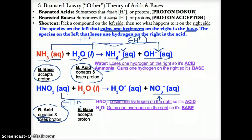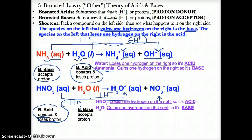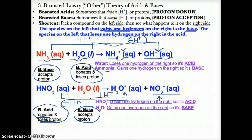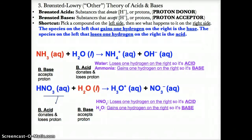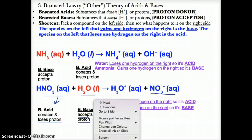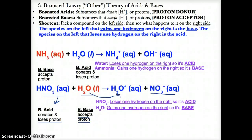On the other hand, H2O (l) becomes H3O+ (aq). Going from H2O to H3O+ means gaining one hydrogen ion — one more hydrogen on the right. Since H2O gains one hydrogen, it is the Bronsted base because it accepts the H+ or proton to go from H2O to H3O+. In general, the species that donates or loses a hydrogen ion is the Bronsted acid, and the substance that accepts or gains a hydrogen ion is the Bronsted base.